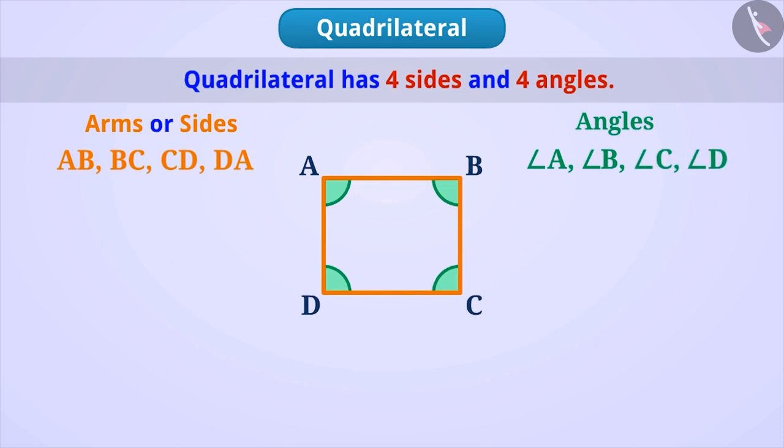Can you tell us how to name a quadrilateral? Come on, try. That's right, we can write its name in different ways like quadrilateral ABCD, BCDA, ADCB or DCBA, etc.